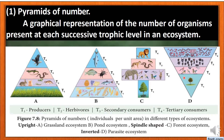Next is the parasite ecosystem. In the parasite ecosystem, from producer to consumer, the number of organisms increases. So this pyramid is an inverted pyramid. To summarize: grassland and pond ecosystems give an upright pyramid of number, forest ecosystem gives a spindle-shaped pyramid, and the parasite ecosystem gives an inverted pyramid.